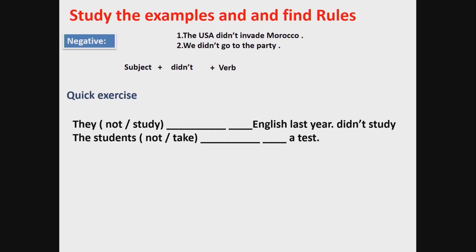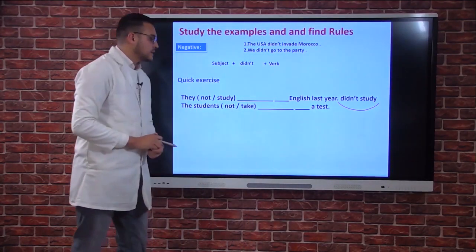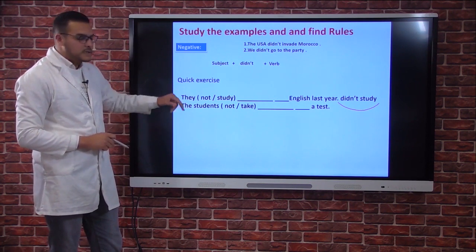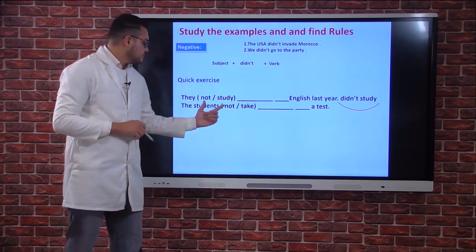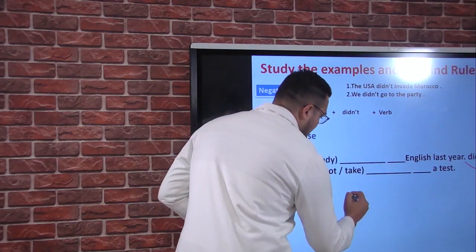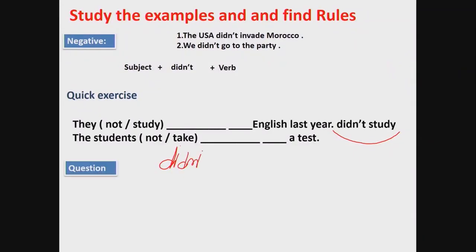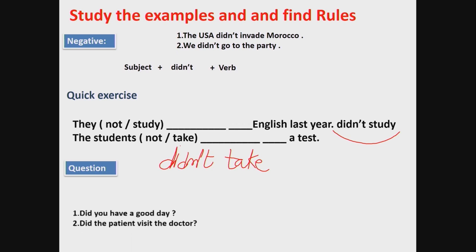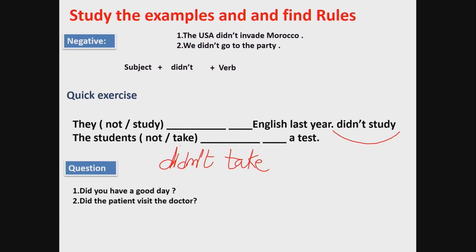In the negative: subject + didn't — which is 'did not' as the long form, 'didn't' as the short form — plus verb in the infinitive. For example: the USA didn't invade Morocco. We didn't go to the party. Quick exercise: 'I' + not + study + English + last year → I didn't study English last year. The students + not + take + a test → The students didn't take a test.